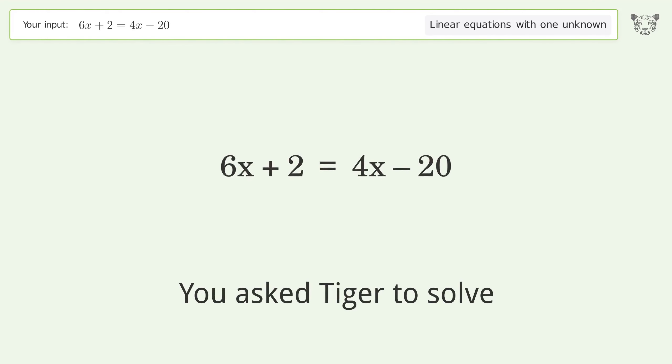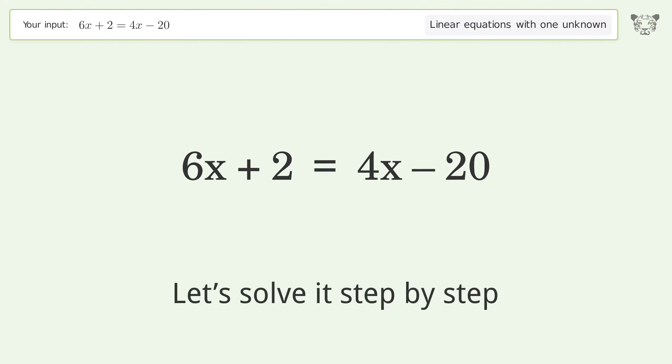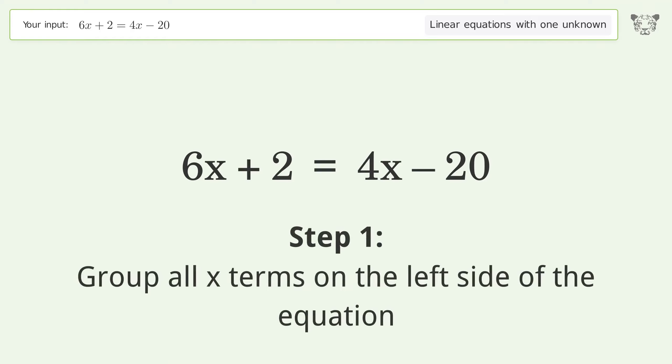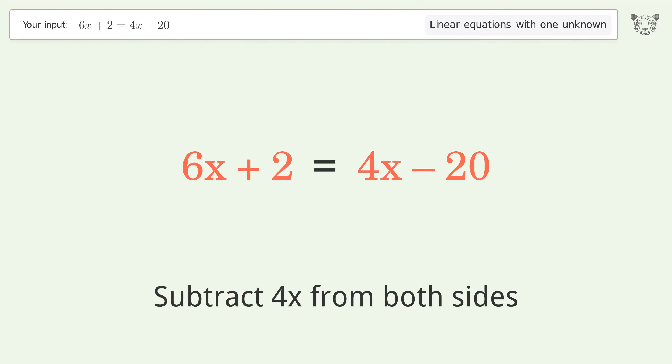You asked Tiger to solve this. This deals with linear equations with one unknown. The final result is x equals negative 11. Let's solve it step by step. Group all x terms on the left side of the equation. Subtract 4x from both sides.